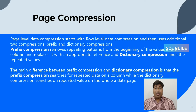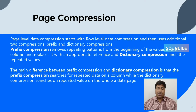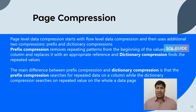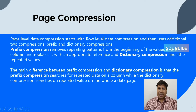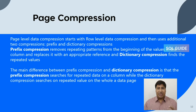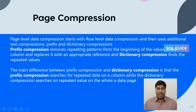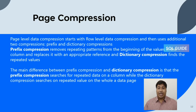What is page level data compression? Page level data compression starts with row level data compression and then applies two additional compression techniques: prefix and dictionary compression. The main difference is that prefix compression searches for repeated data within a column, while dictionary compression searches for repeated values across the whole data page.